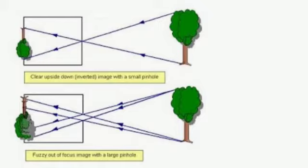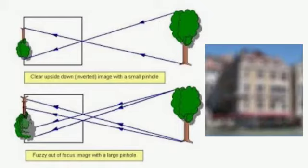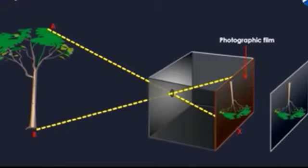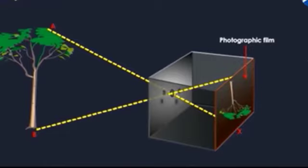If the hole is larger than a pinhole, the image obtained will be blurred. If the screen is replaced by a photographic film, a photograph of the tree can be taken. The number of images can be increased by increasing the number of holes on the pinhole camera.